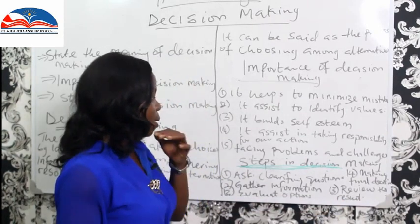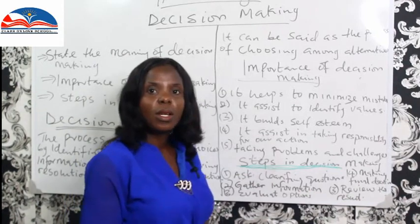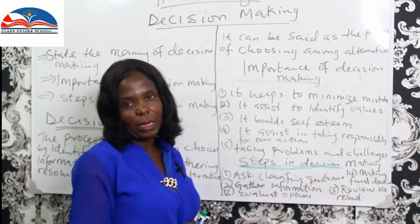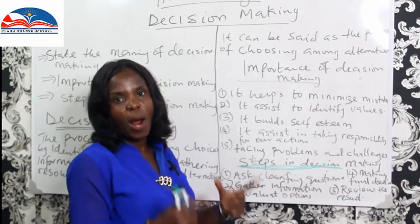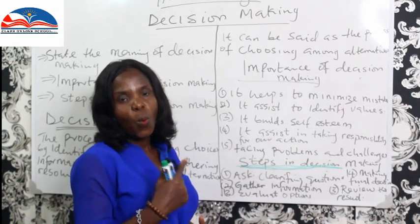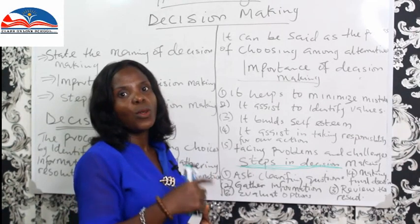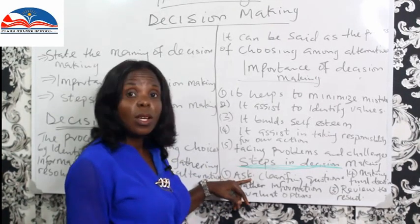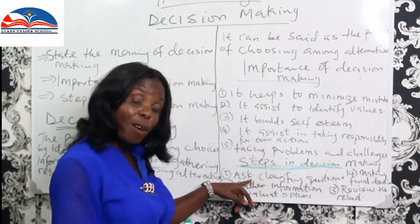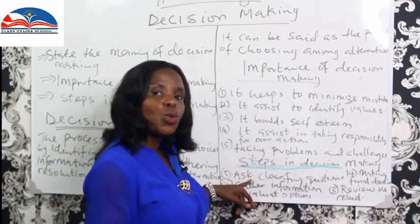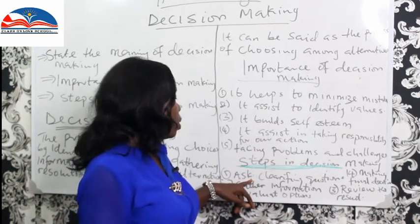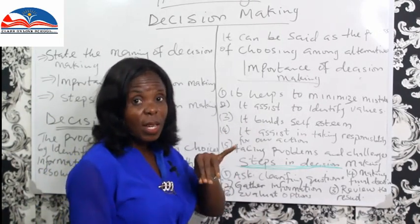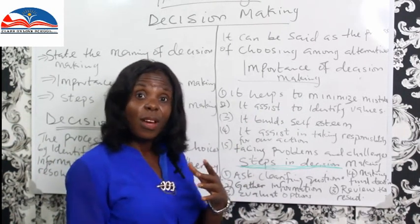Step one: ask clarifying questions. These are questions that give you a broader view of the problem at hand — what, why, how. Why do we need this? How do I go about this? What is involved in doing this? When you have asked these clarifying questions — in your mind or written down — it helps you know how to proceed to the next step.